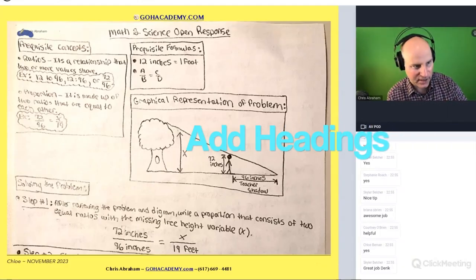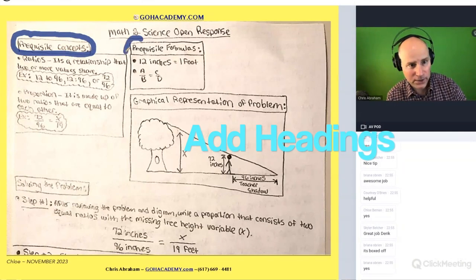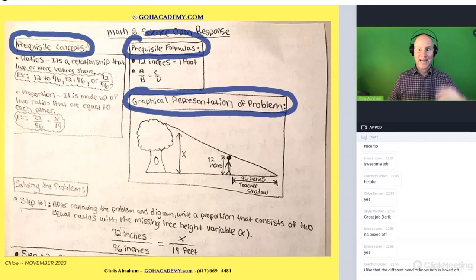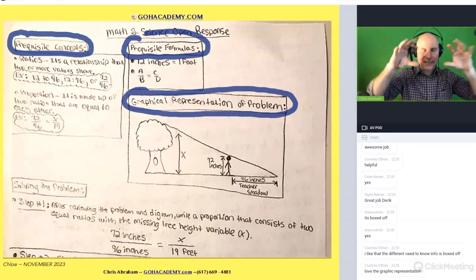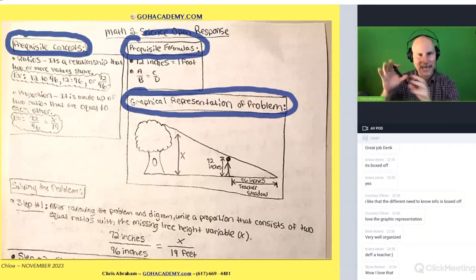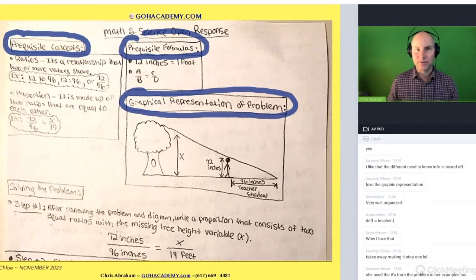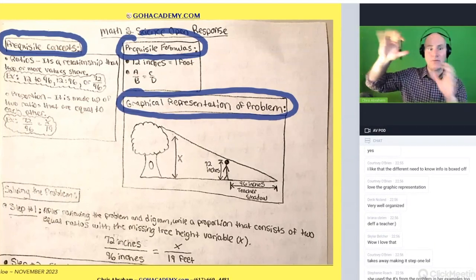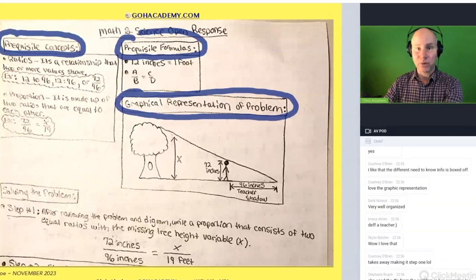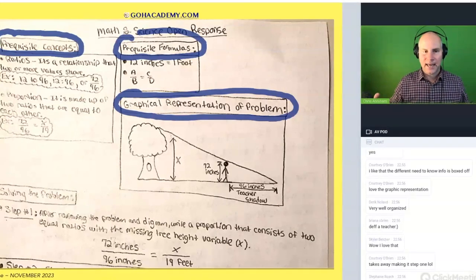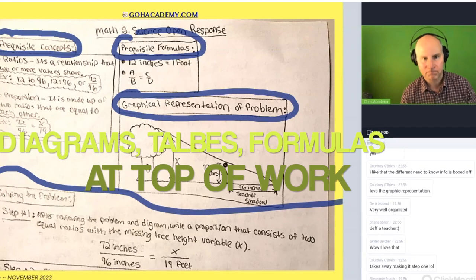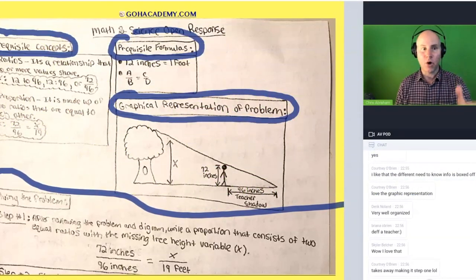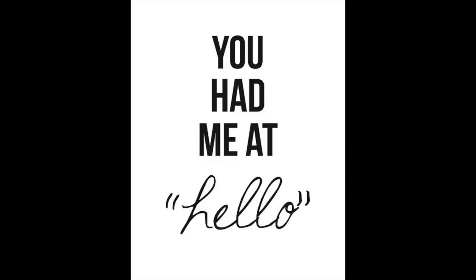Who likes these headings: prerequisite concepts, prerequisite formulas, graphic representation of the problem? Isn't that nice? I like it. The titles really help. Chloe is showing off in a way, right? She has a section on prerequisite concepts, a section on formulas, sections on a diagram or picture or graphic representation. It's sort of at the very top of the problem. Imagine if you're the grader here, and the grader is looking at all these exams and they look at this opening to Chloe's. They're going to be like, you had me at graphic representation.